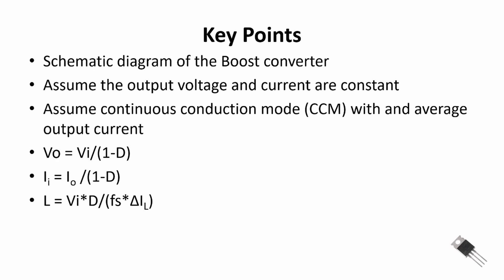Let's review the key points from this video. We presented the schematic diagram of the boost converter: the main switch is a low side switch which closes and shorts node A, causing inductor current to ramp up. Then we open the low side switch and use a diode as the high side switch, which automatically conducts when proper voltage polarity is applied, conducting current to the output. We assumed constant output voltage and output current, and that this was continuous conduction mode.